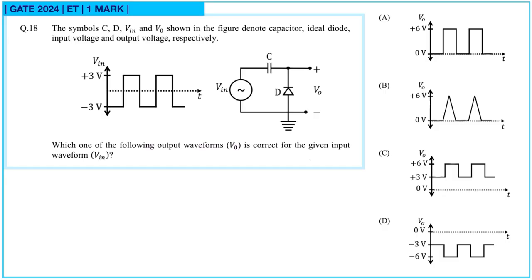The symbols C, D, Vin and Vo shown in the figure denote capacitor, ideal diode, input voltage and output voltage respectively. Which one of the following output waveforms is correct for the given input waveform?